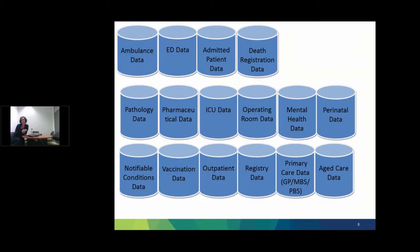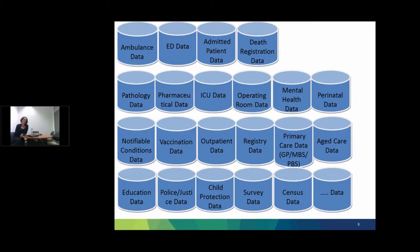Outside of that hospital event, there are other isolated data collections — notifiable conditions, vaccinations, outpatient services, registry information such as cancer registries, stroke registries, trauma. Then there's primary care information that sits outside the state's jurisdiction — GP visits, MBS and PBS — and aged care data. You can take it further and look at education, police and justice, child protection, surveys, census data, et cetera. There's a lot of information out there. Each joined together could be quite useful, but it's just sitting in a lot of silos.